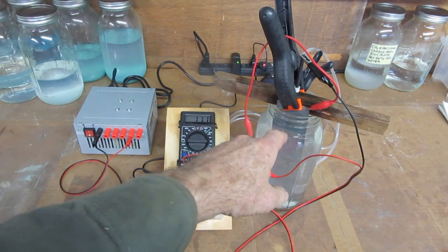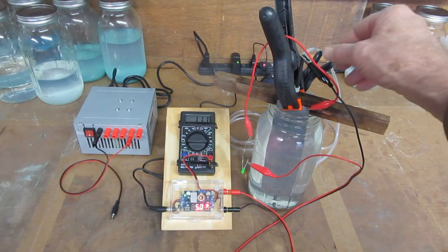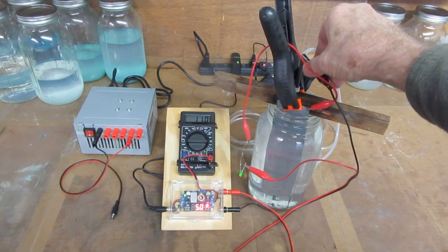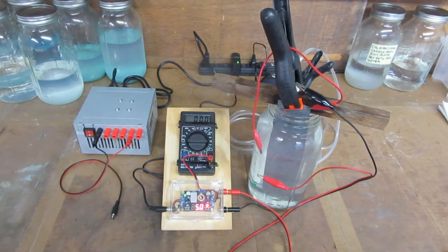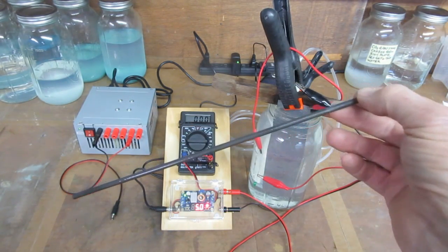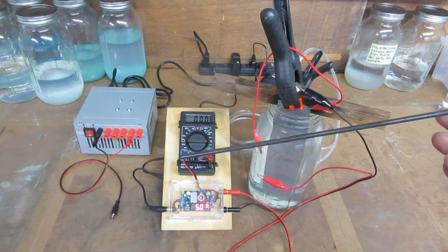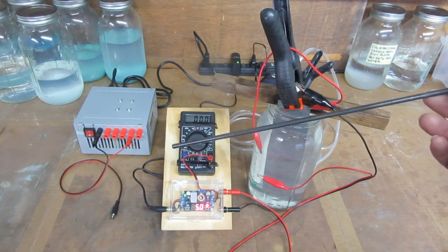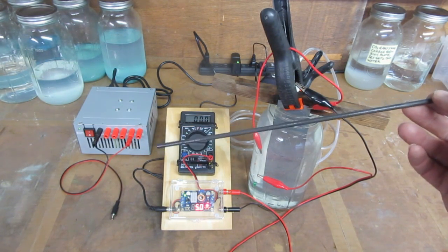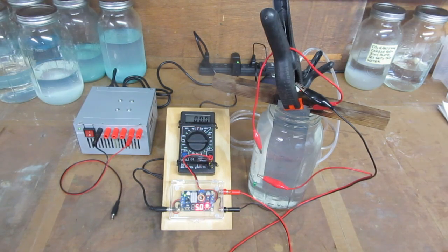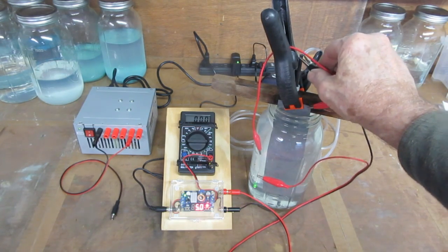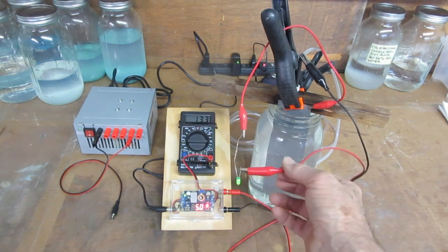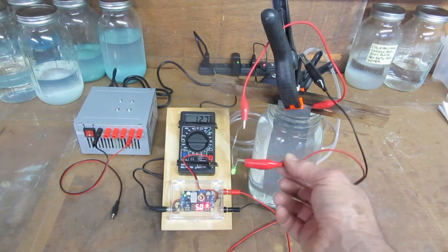I'm going to unplug this to show you. It's got a 3/16 by 12 inch carbon rod, a gouging rod for welding. I stripped off the copper. The negative is connected to that, and I got an LED on here.